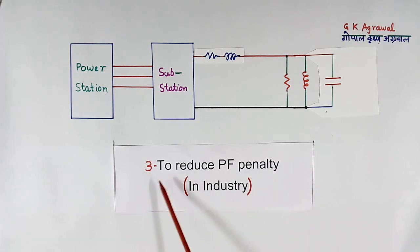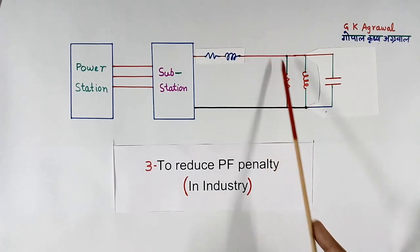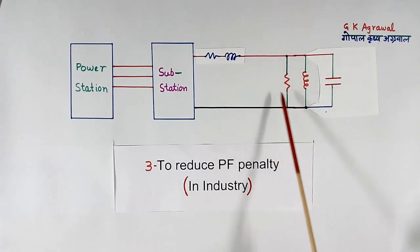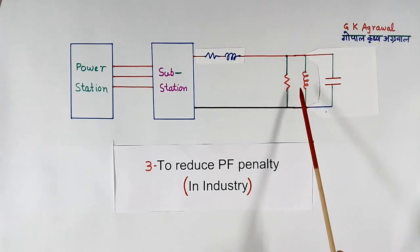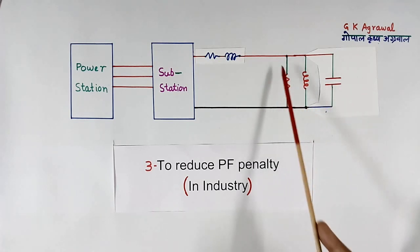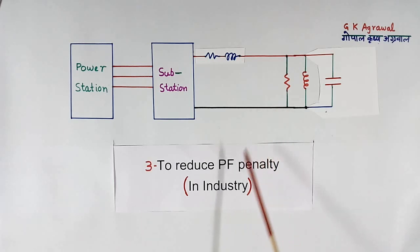Third is to reduce power factor penalty. Just I explain to you, there are lot of problems here due to poor power factor. So electric board will put power factor penalty to encourage installing power factor correction equipment. So if we correct the power factor here, our power factor penalty also will reduce. This happens in industry.